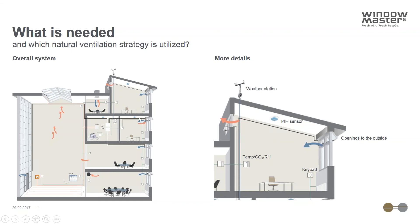Natural ventilation is controlled based on indoor air temperature, CO2 level, relative humidity, outdoor air temperature, wind speed, wind direction, and rain. It is controlled using actuators linked to a dedicated control system — what we call NV Comfort — or a BMS system. We offer a complete solution from design, to supplying components, to providing the control systems for these kinds of buildings.